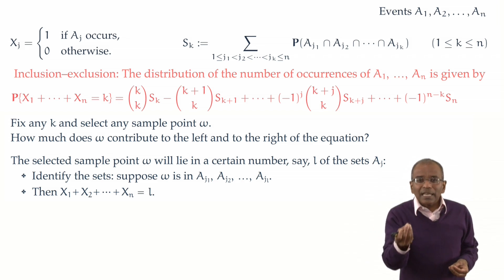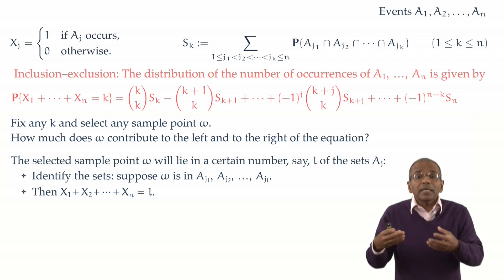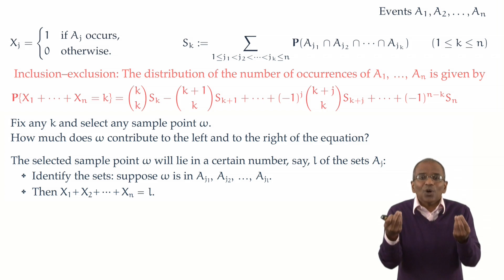Or in other words, in a slightly more verbose mathematical language, the sum of the indicators X1 through Xn is L, because precisely L of the X's take value 1, and the remaining take value 0. The X's pick out exactly which events occur when omega is the outcome.